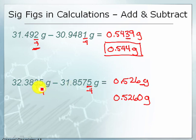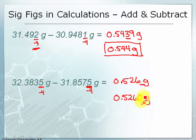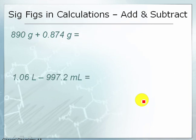So in addition and subtraction, it's where. The 10 to the minus 4 spot is uncertain in these inputs, and so we'll be uncertain in our answer. That's our first uncertain figure and our last significant figure.